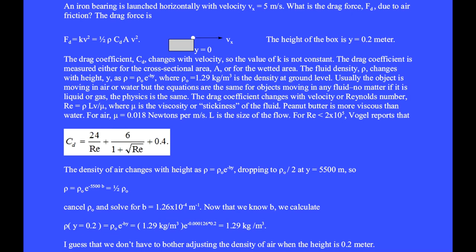For Reynolds number less than 2 times 10 to the fifth, Vogel reports that the drag coefficient goes as 24 over the Reynolds number plus 6 over 1 plus the square root of the Reynolds number plus 0.4. The density of air changes with height as rho equals rho 0 e to the minus by dropping to half its ground level value at a height of 5500 meters.